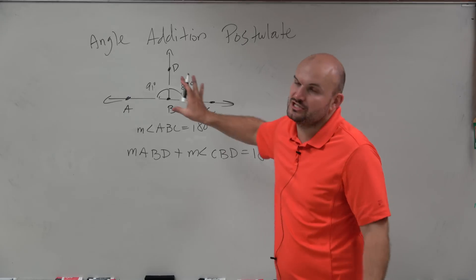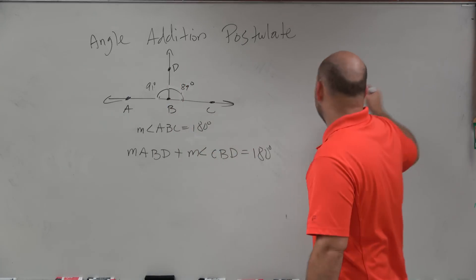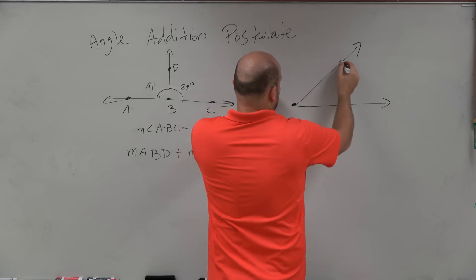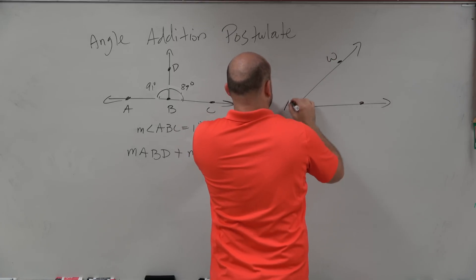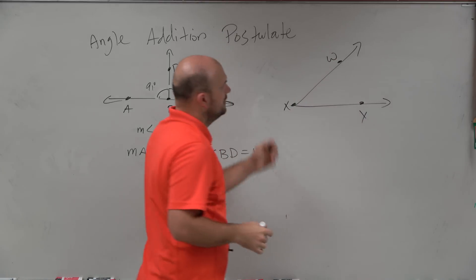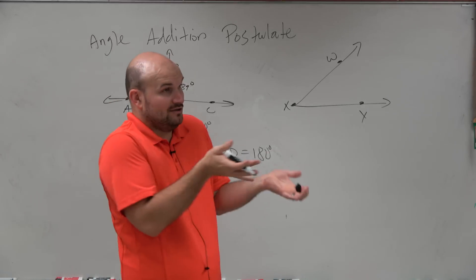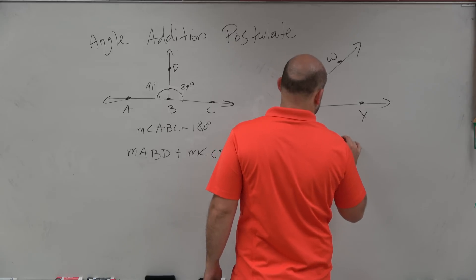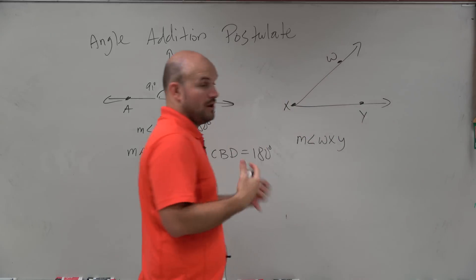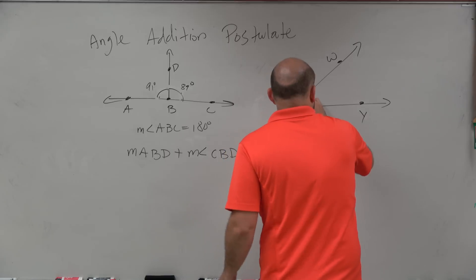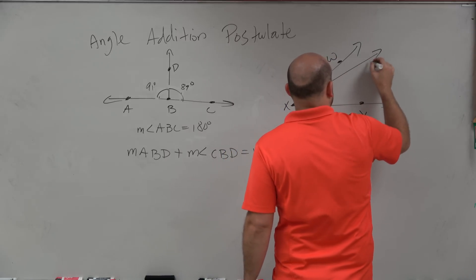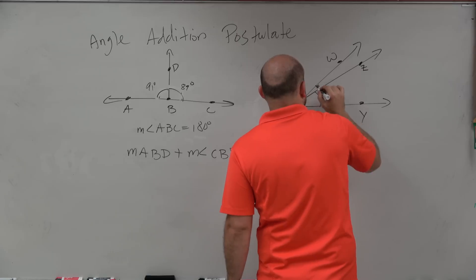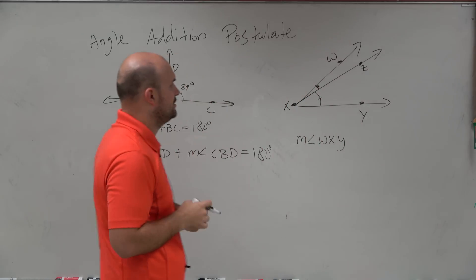So the angle addition postulate doesn't just care for straight angles. It also makes the case for any angle. If you just have a nice, beautiful angle, just like this, and let's call this WXY, who cares what this angle is equal to, right? This angle is equal to something. So we can just say the measure of angle WXY, whatever that angle is equal to. Now, if you throw in another line here, and then you say, well, what about these two angles? How are these two angles related to my larger angle WXY?